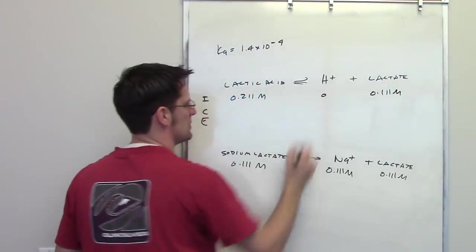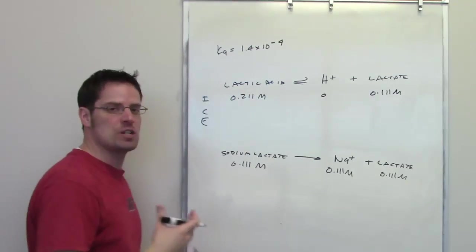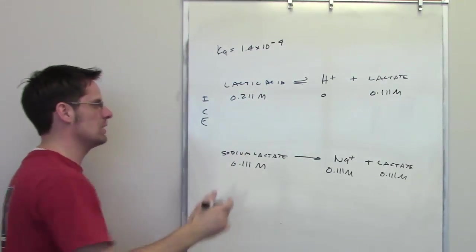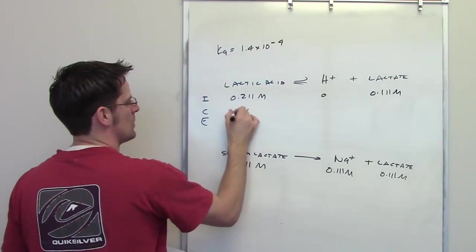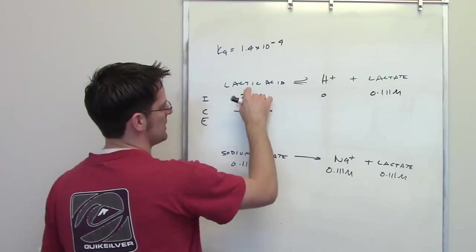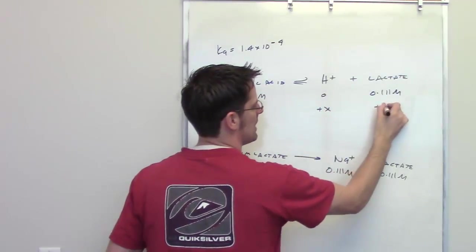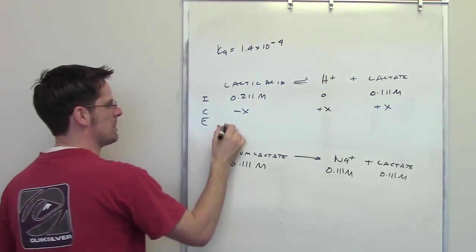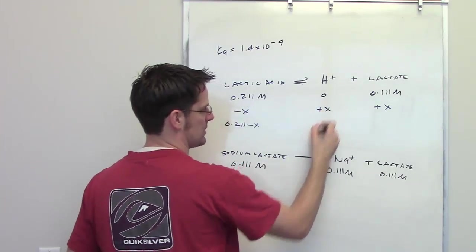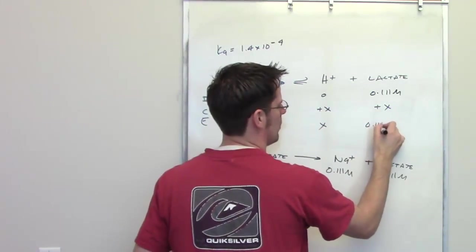The initial concentration of H+ is 0. Now, I'm going to go ahead and realize that lactic acid is going to decrease by some amount over the course of going back and forth until it reaches equilibrium, which I will call X. So as it decreases, it will decrease by an amount minus X. Because they're present in a 1 to 1 to 1 ratio, H+, and lactate will increase in their amounts by plus X. So the final equilibrium concentration of each of these is 0.211 minus X, X, and 0.111 plus X.